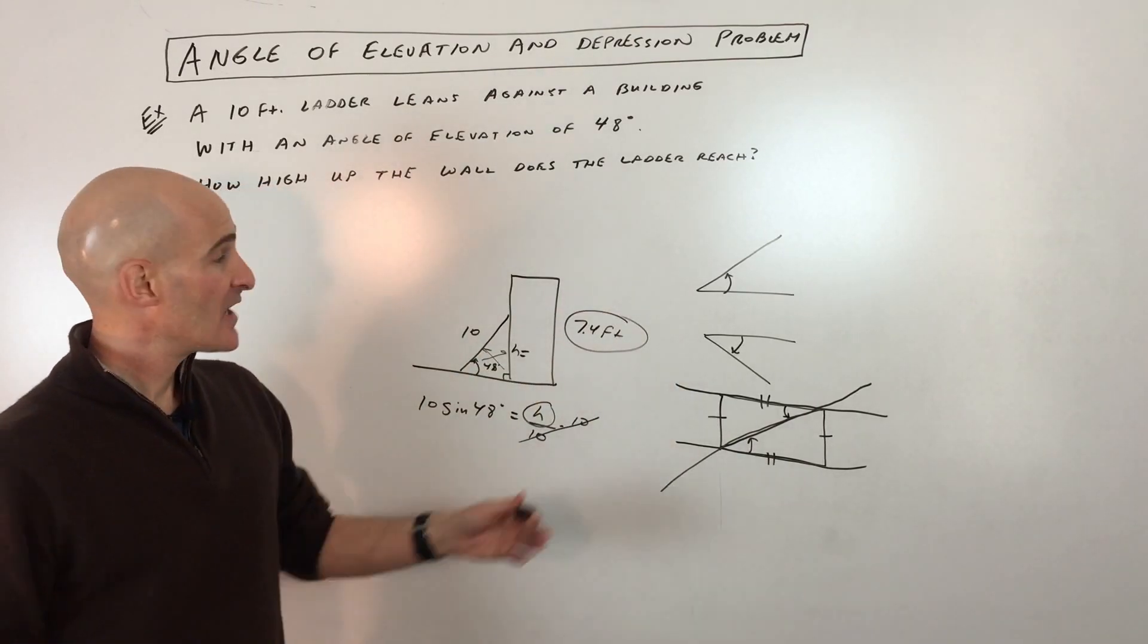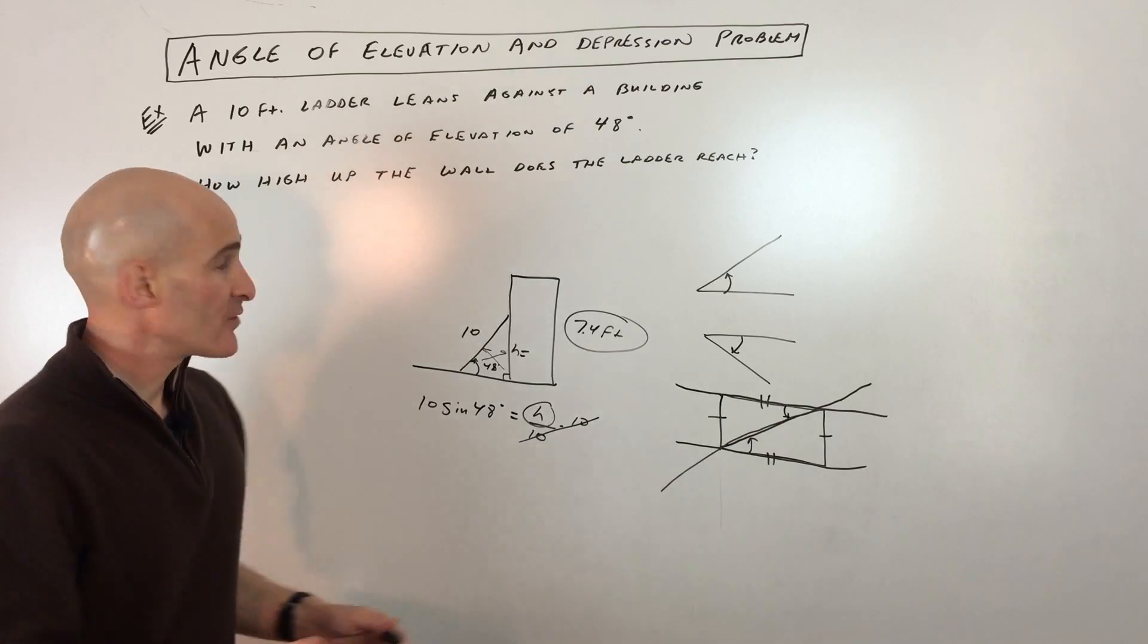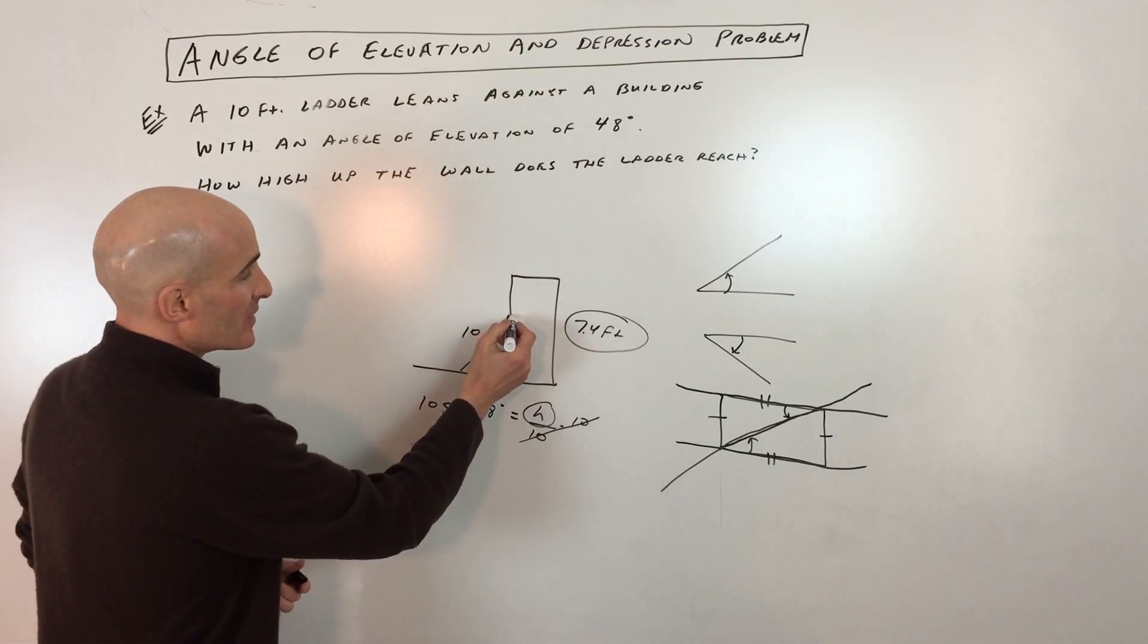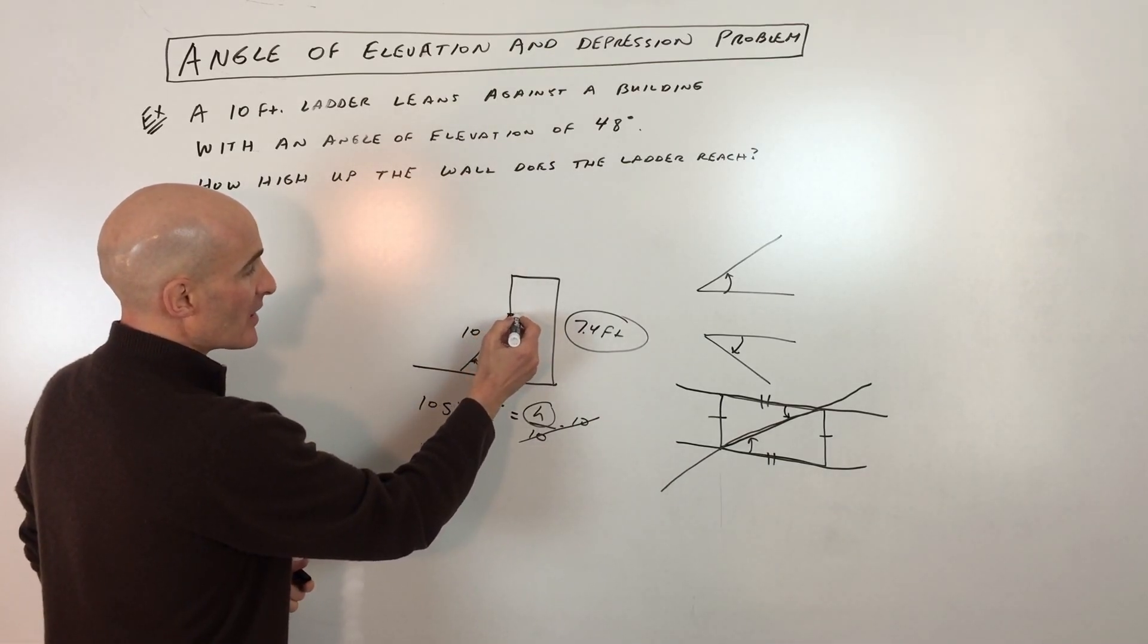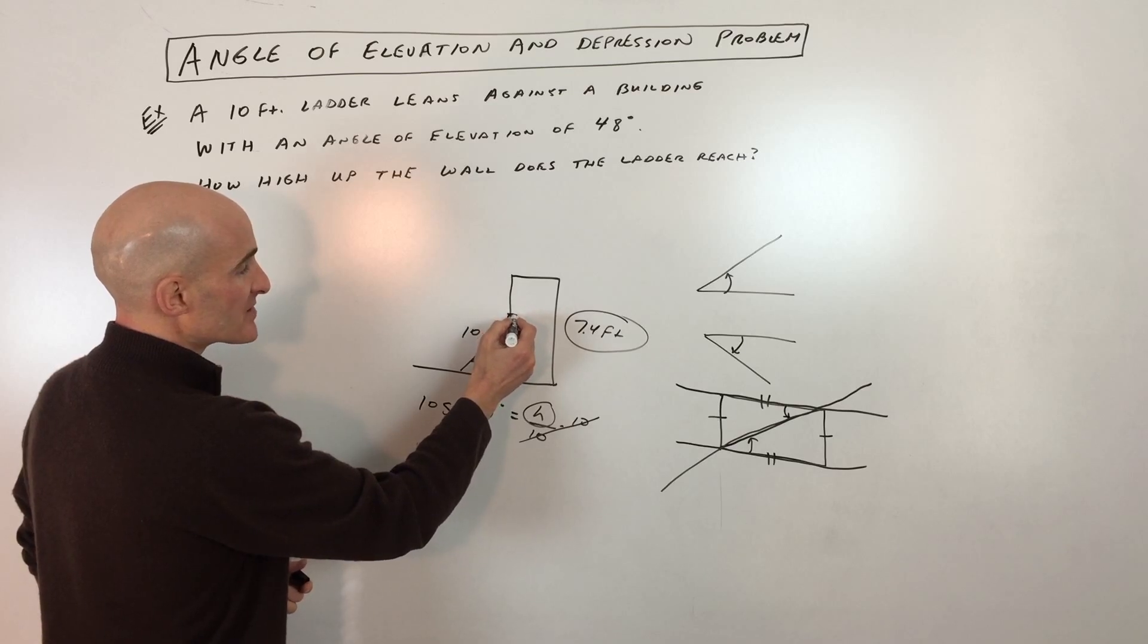So again, angle of elevation, angle of depression problems. One other thing I would just mention is like, say for example, there was somebody in this building, let's say they're looking out from this ledge right here.